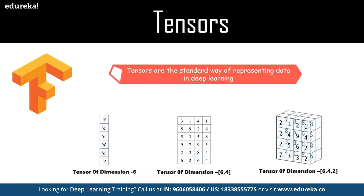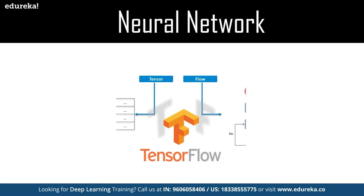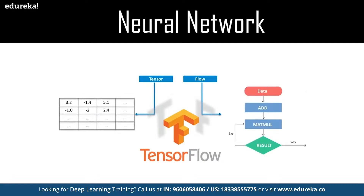TensorFlow's name is directly derived from its core framework. In TensorFlow, all computation involves tensors — a tensor is a vector or matrix of n dimensions that represents all data types. All operations are conducted inside a graph, which is a set of computations that take place sequentially. Each operation is called an op node, and nodes are connected to each other. TensorFlow allows developers to create dataflow graphs that describe how data moves through a series of processing nodes.